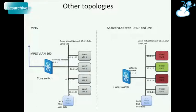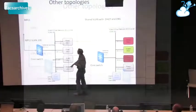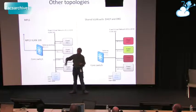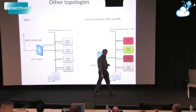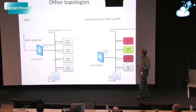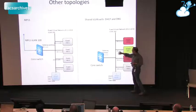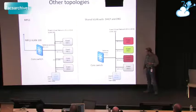This is the MPLS topology — a service provider cloud bringing in MPLS VLAN 100 from your data center or your premises and stretching that into your VLAN 100 here, so these VMs appear to be local to your premises. Another topology: the administrator can create a shared VLAN and allow different tenants to start up VMs on it.